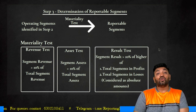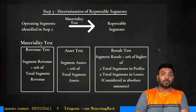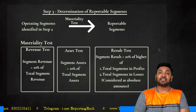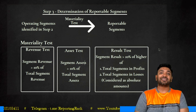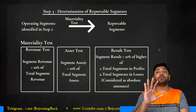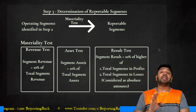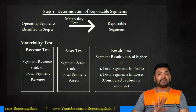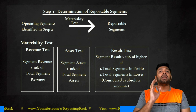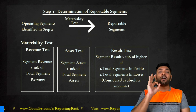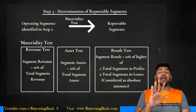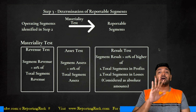A segment which satisfies the revenue test is sufficient to be called a reportable segment, even if it does not satisfy the asset test or result test. The same applies to the other tests. Therefore, if a segment satisfies any of the three materiality tests — revenue test, result test, or asset test — it can be considered a reportable segment.